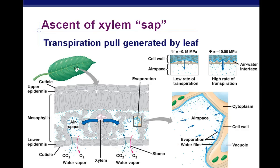Ascent of xylem sap. Xylem pulls up water and minerals from the roots to the leaves. We've talked about how water travels through the apoplast and symplast routes in the roots, then it has to pass the Casparian strip, and then it enters the xylem. In the xylem, we have adhesion and cohesion until water gets up to the leaves.